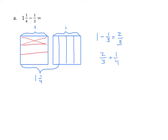Again, we don't have common units, so we'll partition both of these rectangles to give us common units. Just as we've been doing all along since nearly the beginning of this module, we can see that our common unit is now 12. By looking at our models, we see that 2 thirds is 8 twelfths, and 1 fourth is 3 twelfths. The sum of 8 twelfths and 3 twelfths is 11 twelfths. So the difference between 1 and 1 fourth and 1 third is 11 twelfths.